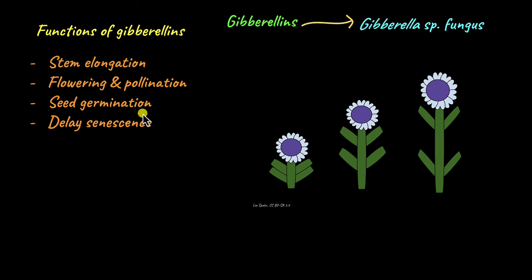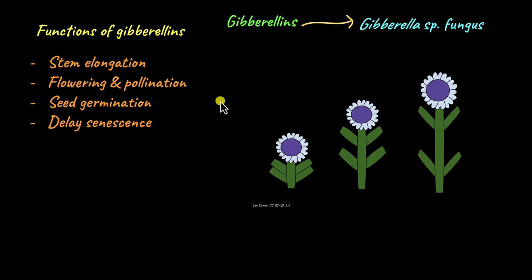Gibberellins are also involved in seed germination. Under favorable conditions the seed has to germinate to form a new plant, and that is also governed by gibberellins. Gibberellins also promote growth by delaying senescence, which means aging. When a plant is aging, leaves lose chlorophyll and chloroplasts, become yellow, and eventually fall off. Gibberellins promote growth by delaying this senescence of plant parts.